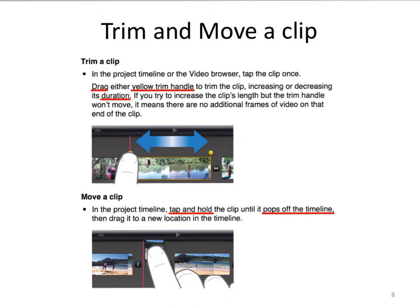The second gesture is trim and move a clip. To trim a clip in iMovie, tap the clip once until yellow trim handles appear around it, then drag either yellow trim handle to increase or decrease the duration of the clip. To move a clip, tap and hold the clip until it pops off the timeline, and then you can drag it to a new position.